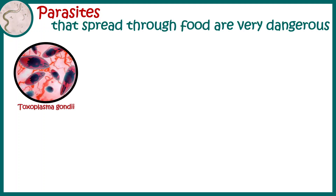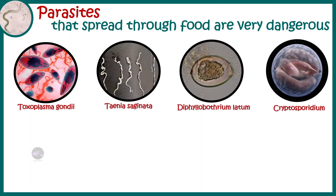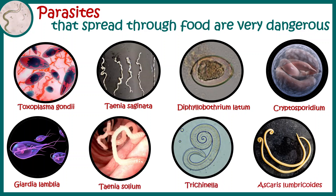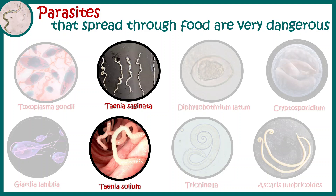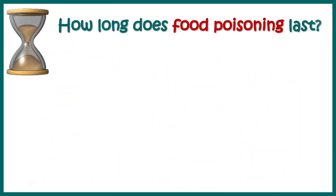In rare occasions, parasites can also lead to food poisoning. These include Toxoplasma, Taenia, and many others. Among these, Taenia saginata and Taenia solium are the most common. Uncooked beef, pork, or fish may carry these cyst forms, leading to food poisoning and abdominal problems.